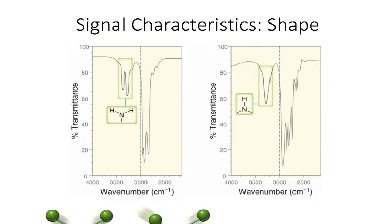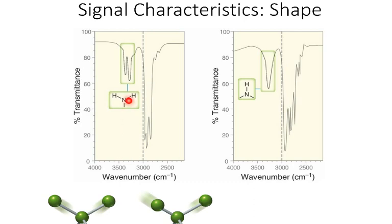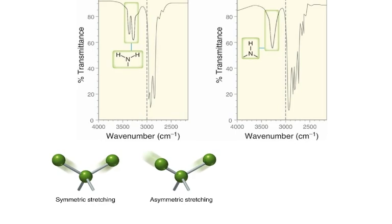The final functional group to discuss is amines, which typically absorb around 3,400 wave numbers. We can distinguish between a primary amine with two hydrogens and a secondary amine with just one hydrogen based on the shapes of their peaks. Primary amines exhibit two types of N–H stretching: symmetric stretching, where both hydrogens move away and together simultaneously, and asymmetric stretching, where one goes in while the other goes out. Because primary amines have two types of nitrogen–hydrogen vibrations, they produce two peaks close together. Secondary amines, having only one type of stretching available, show just one peak.